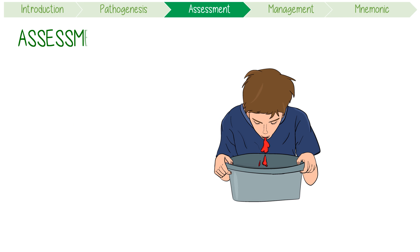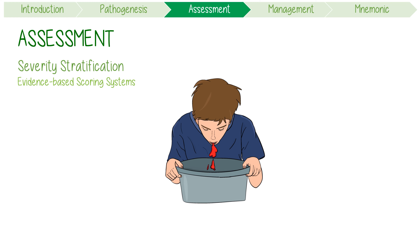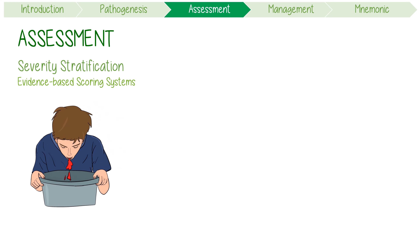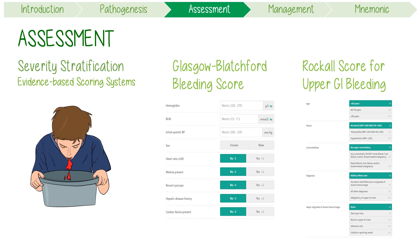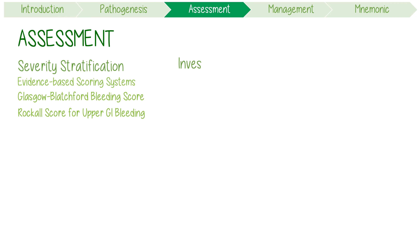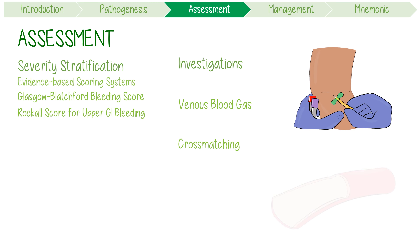Moving on to assessment, severity stratification is vital. There are multiple evidence-based scoring systems that can help, such as the Glasgow Blatchford bleeding score and the Rockall score for upper GI bleeding. These tools use clinical and biochemical parameters to determine severity and urgency of endoscopy. Core investigations specifically include venous blood gas, cross-matching the patient's blood, and organising an endoscopy.